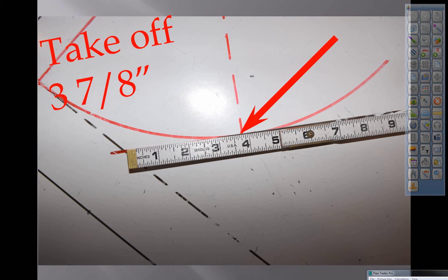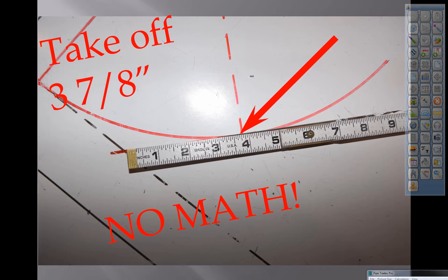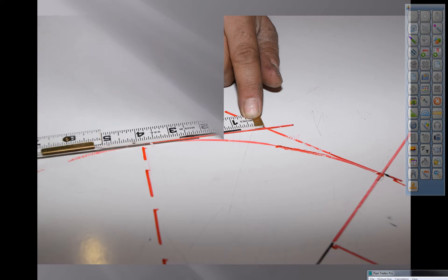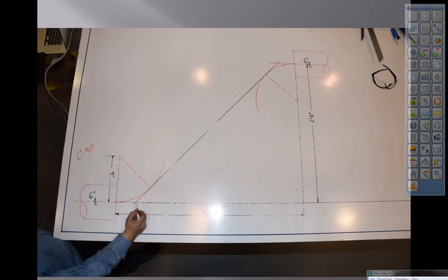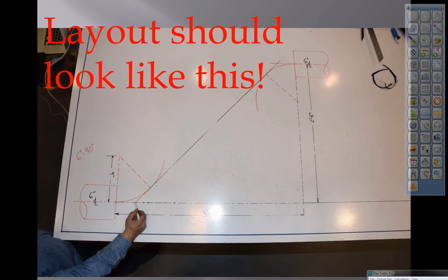Keep in mind we still don't know the angle of the fitting, but we do know that the fitting takeoff is 3 and 7 eighths, that will be cut out of a 6 inch long radius 90 and so far we have used no math. We're going to verify the other end at 3 and 7 eighths. Right now your layout should look like this.